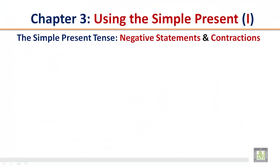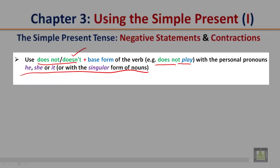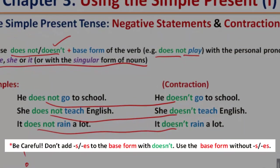The simple present tense: negative statements and contractions. Use does not or doesn't plus the base form of the verb. Play is the base form, so does not play with the personal pronouns he, she, or it, or with the singular form of nouns. Doesn't is a contraction of does not. Here are the examples: he does not go to school. With the contraction, he doesn't go to school. She does not teach English. With the contraction, she doesn't teach English. It does not rain a lot. With the contraction, it doesn't rain a lot. Be careful, do not add S or ES to the base form with doesn't.